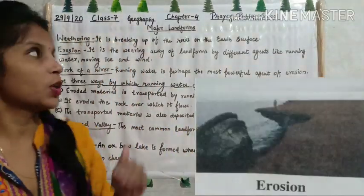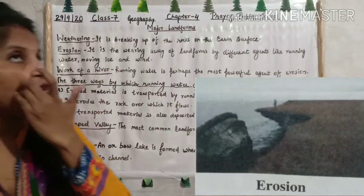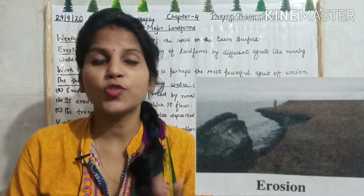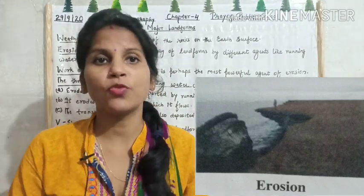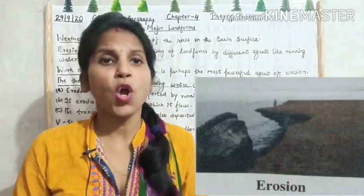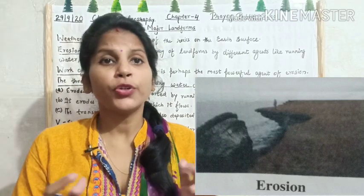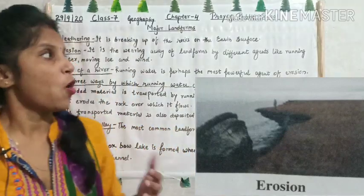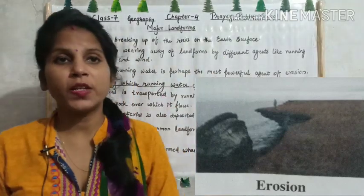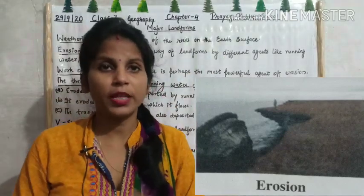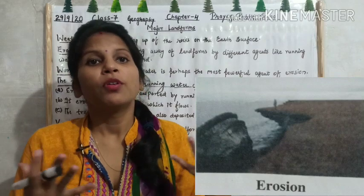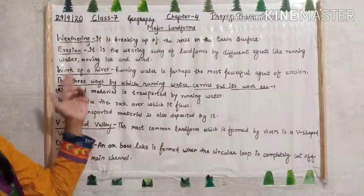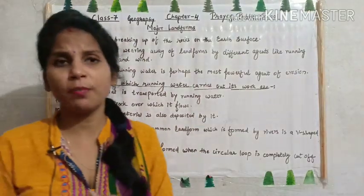The second one is erosion. It is the wearing away of landforms — whether plateaus, plains, or valleys — the damage that happens to them is what we call erosion. There are many agents of erosion, such as running water, wind, moving ice or glacier.